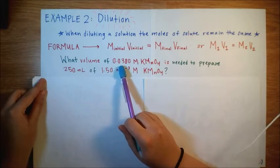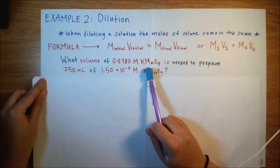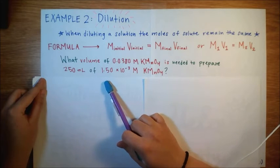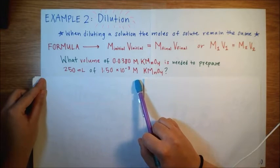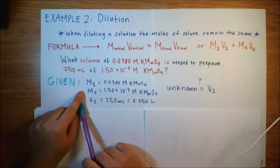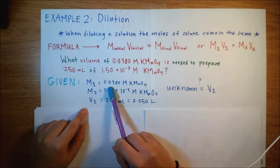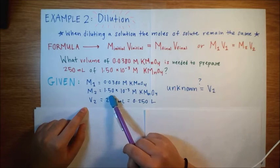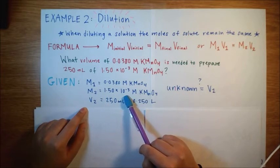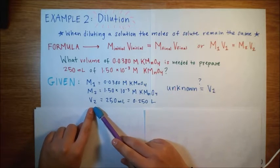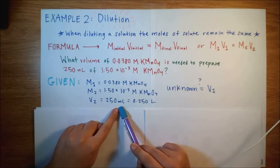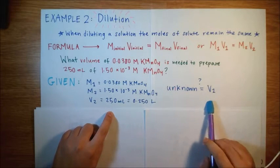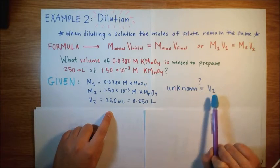What volume of 0.0380 molarity of potassium permanganate is needed to prepare 250 milliliters of 1.5 times 10 to the negative third molarity of potassium permanganate. We know that the first molarity is equal to 0.0380 moles per liter of potassium permanganate. The second molarity given is 1.50 times 10 to the negative third and the final volume value is 250 milliliters, which we know just converts to 0.250 liters. So the only unknown here in the equation M1 V1 equals M2 V2 is V1.